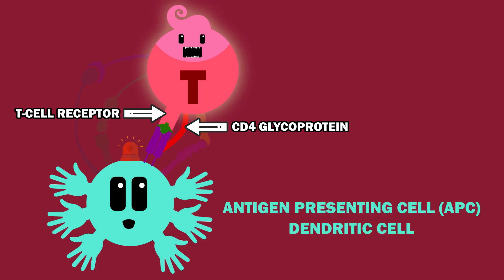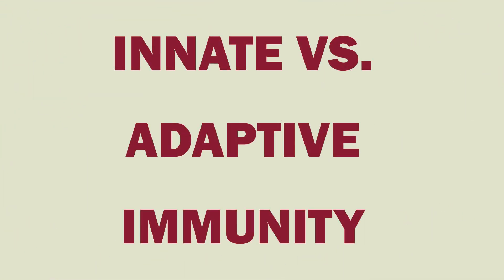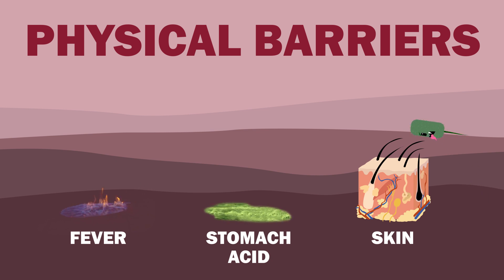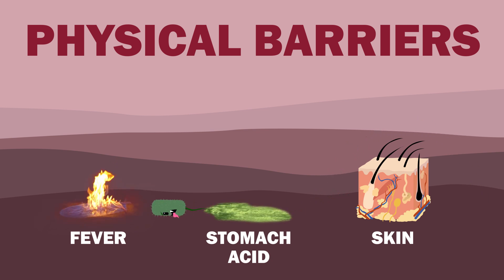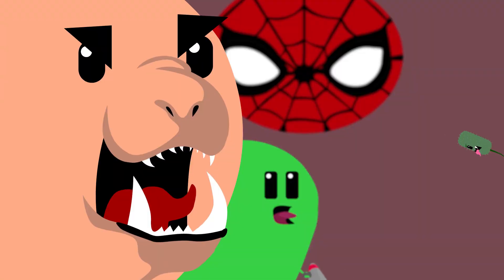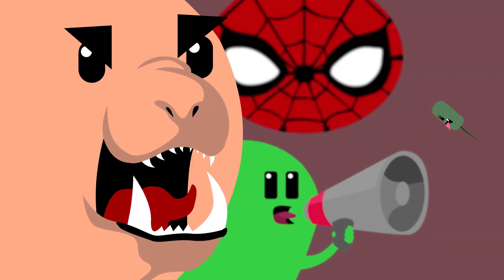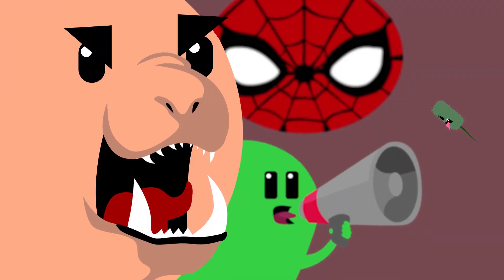In order to understand how HIV impacts the immune system, we must first understand the difference between innate and adaptive immunity. The innate immune system consists of generalized barriers to pathogenic invasion. This includes physical barriers like your skin, cell-destroying stomach acid, the inflammatory response, and cells like macrophages, neutrophils, and mast cells that recognize molecules common to pathogens.